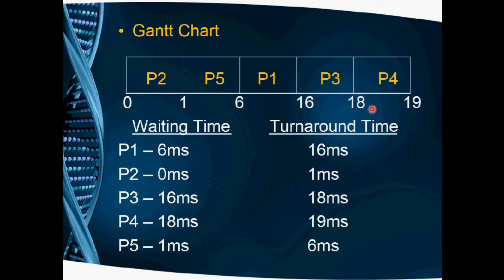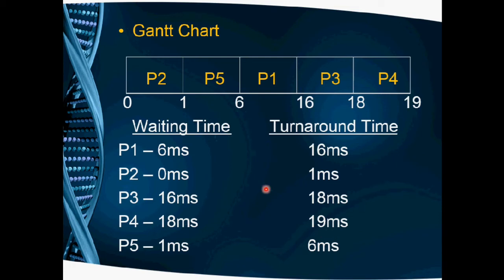Similarly, for P4, the starting time is 18, so 18 is the waiting time, and 19 is the turnaround time. For P5, the waiting time is 1 and the turnaround time is 6. We then take the average of the waiting time values to get average waiting time, and the average of turnaround time values to get average turnaround time.